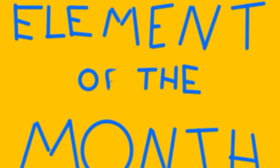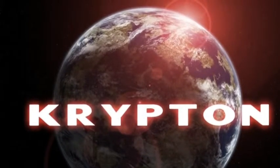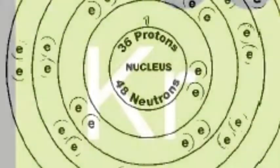Good morning and welcome to this month's episode of Element of the Month. Today's element is Krypton. Let's start with the statistics of Krypton. First off, the symbol, the abbreviation of Krypton on the table of elements, is Kr.